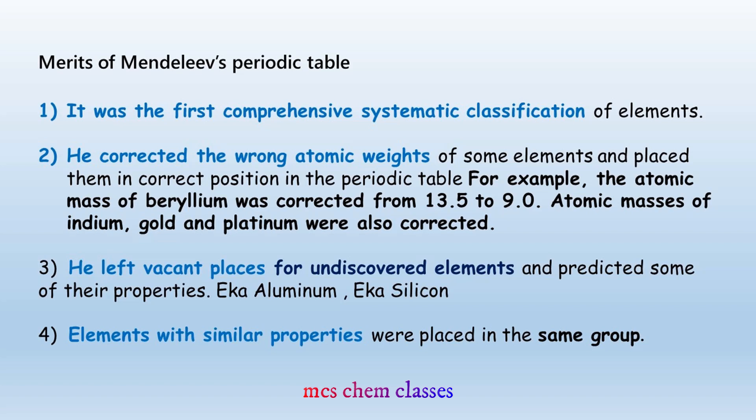Correction of doubtful atomic mass: Mendeleev's periodic table helped in correcting the doubtful atomic masses of certain elements. The atomic mass in Mendeleev's periodic table has been corrected from 13.5 to 9.